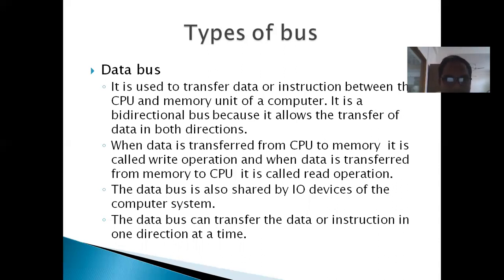First is the data bus. It is used to transfer data or instructions between the CPU and the memory unit of a computer. It is a bidirectional bus because it allows the transfer of data in both directions. There are two types of operations: read operations and write operations.